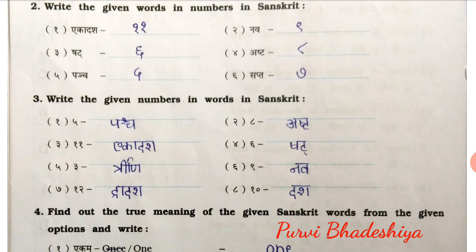Question number 2: Write the given words in numbers in Sanskrit. The very first word is Ekadash means 11. Second: Now means 9. Third: Shatter means 6. Fourth: Ast means 8. Fifth: Punch means 5. Sixth: Sapt means 7.